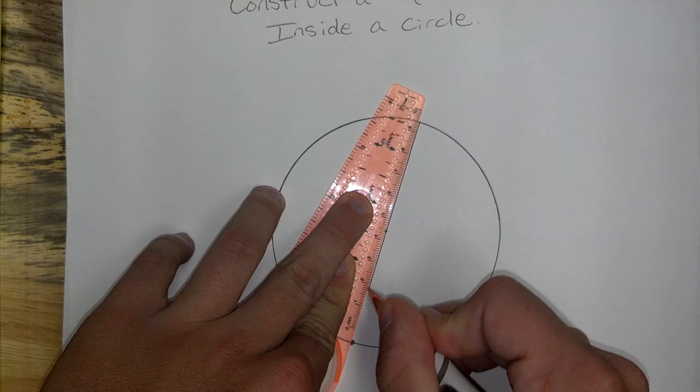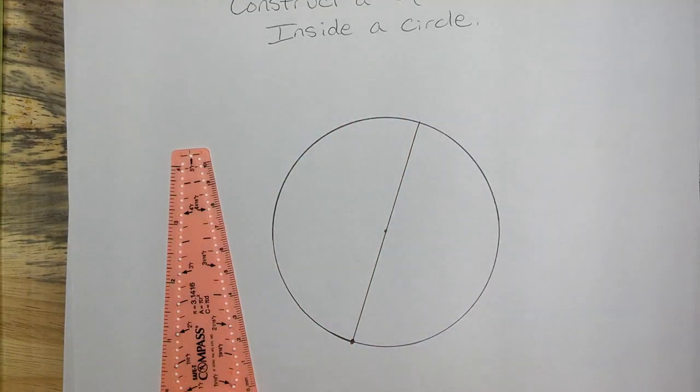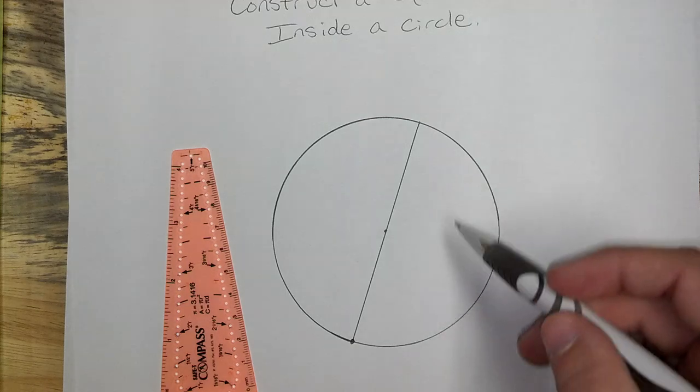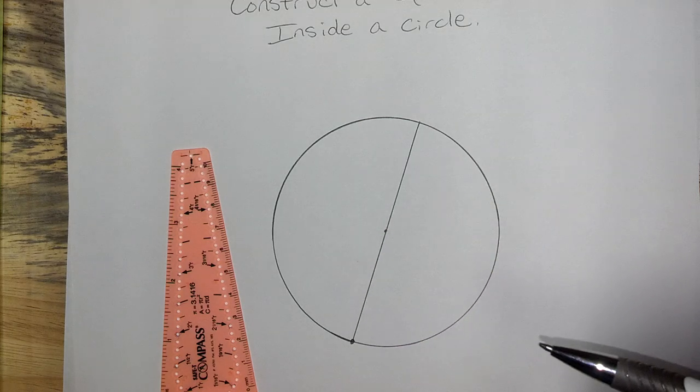The diameter is actually what I need right now. Here, I have a diameter. I've chopped my circle exactly in half so that this side is the exact same size as that side, or congruent.